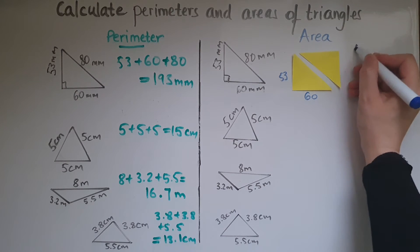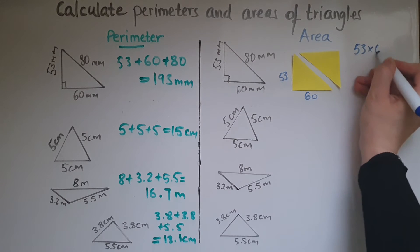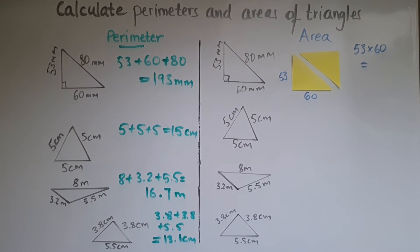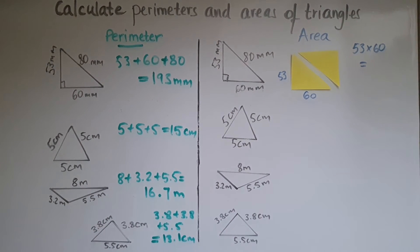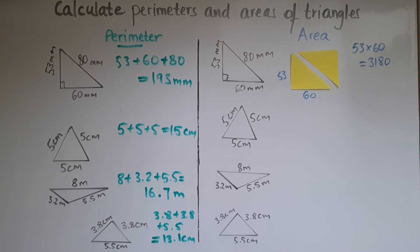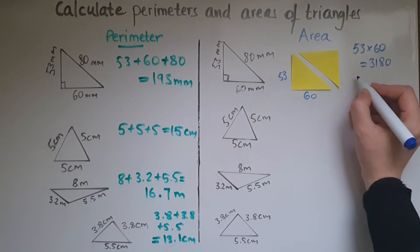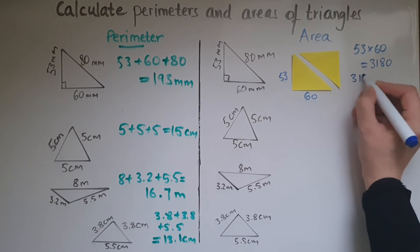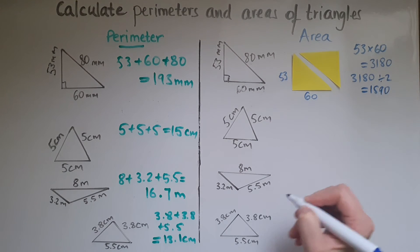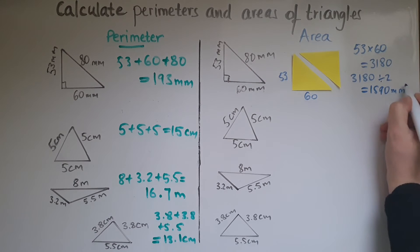So 53 times 60, that is equal to 3,180. And we'll divide that by 2. It gives us 1,590 millimeters squared.